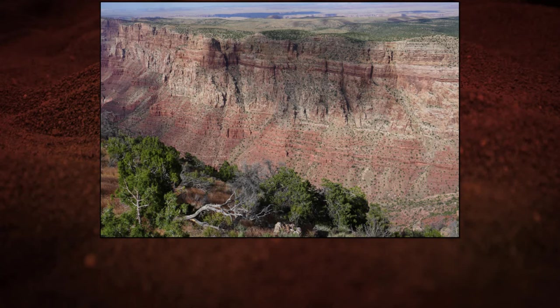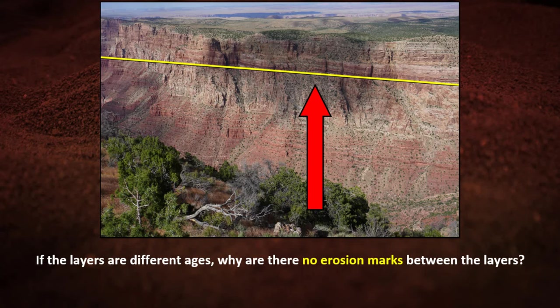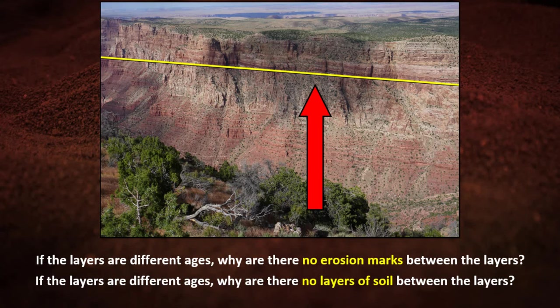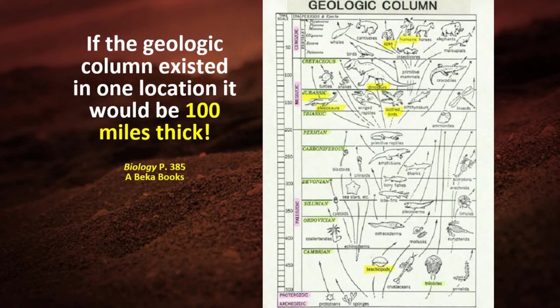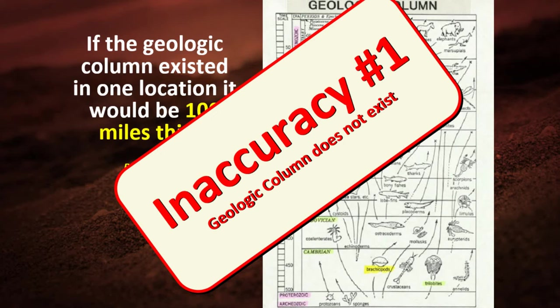I have a picture of the Grand Canyon from this past summer. The layers are stacked like pancakes. If the layers are different ages, why don't we see erosion marks between them? And why is there no soil seeping down between the layers? It's because it happened during the worldwide flood in one year — each layer was a tsunami wave of deposits. If the geologic column existed as shown in textbooks, in one location it would be 100 miles thick, but you see it nowhere. Inaccuracy one: the geologic column does not exist as displayed in textbooks.